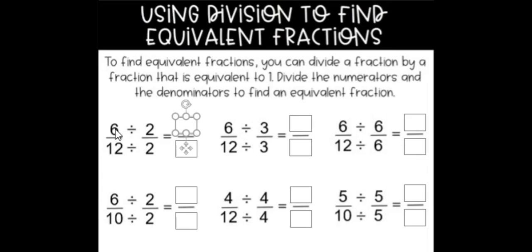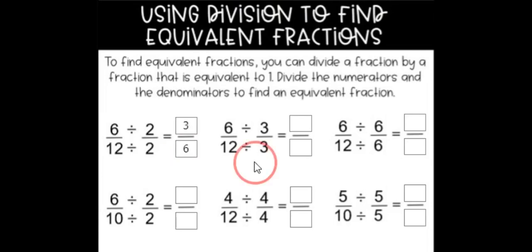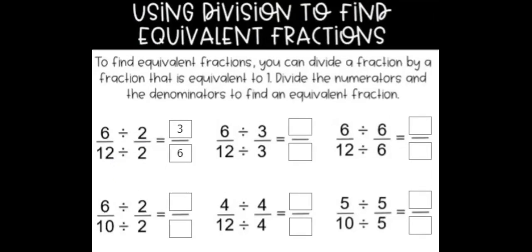So for this first one we've got 6 divided by 2 which is going to get us to 3. Then we do our denominator: 12 divided by 2 which gets us to 6. So now what this says is that 6 twelfths is equivalent to 3 sixths. It is also important to remember that when you're dividing you're seeing how many times the smaller number fits inside of the larger number.